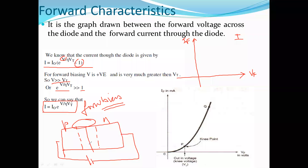The depletion layer must be fully collapsed, meaning the majority charge carriers must start flowing through the junction. We need to increase the input voltage until this collapse is complete and majority charge carriers start flowing. Until we increase this voltage sufficiently, the current remains negligible.